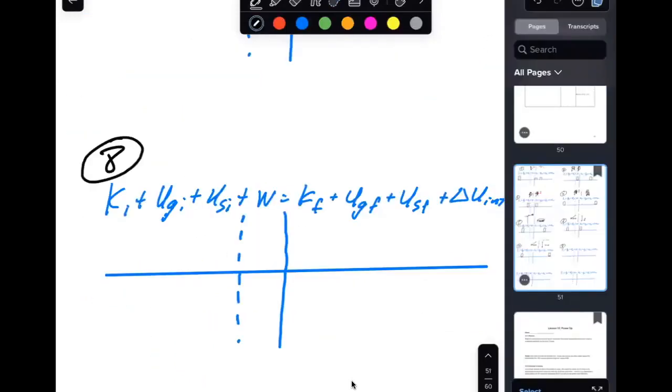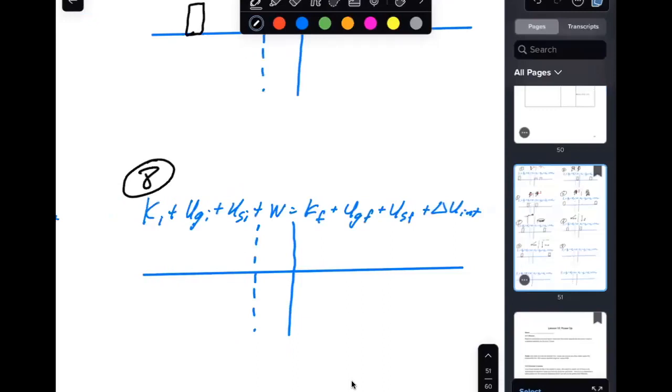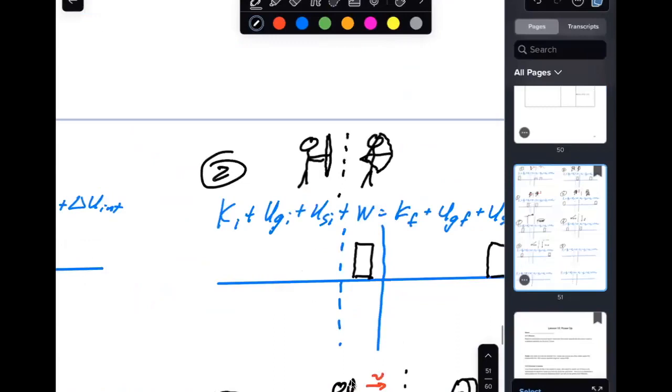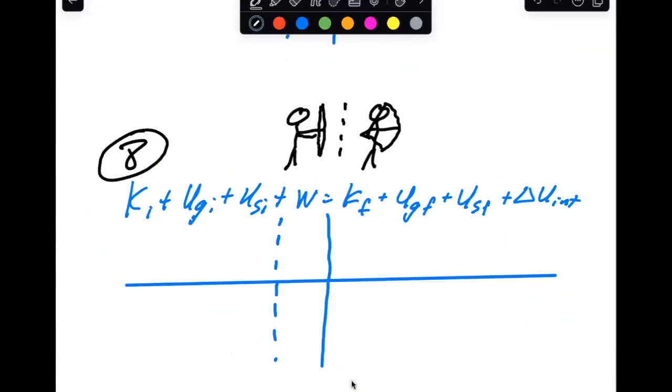Archer pulls back on the bow. This time, the archer is in the system. So there's no work in the beginning. There's no energy in the beginning. There's no work because the archer is now in the system. Work can only come from outside of the system. So what does this look like? In the end, there is the elastic potential energy. Where did that come from? Came from the fact that the archer had to use some of his or her own internal energy. Burn calories. They lost some of that energy that they have from their food intake.